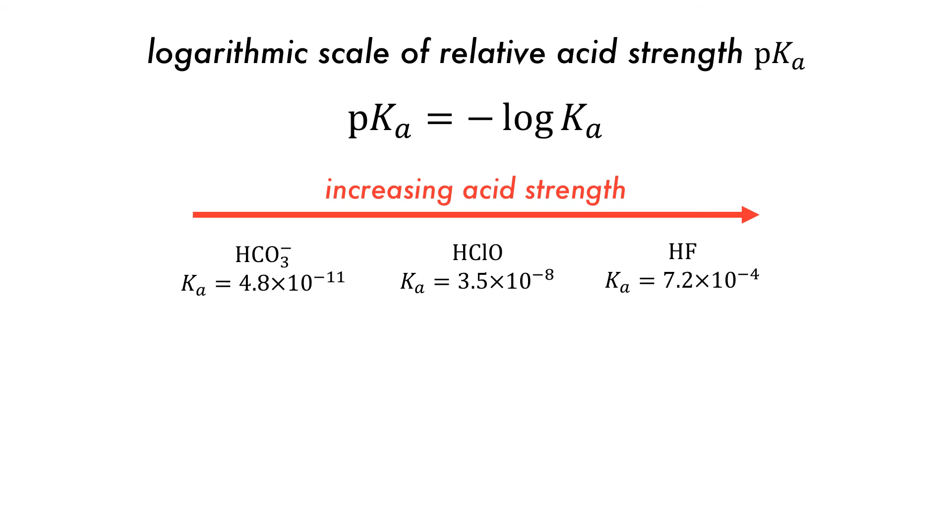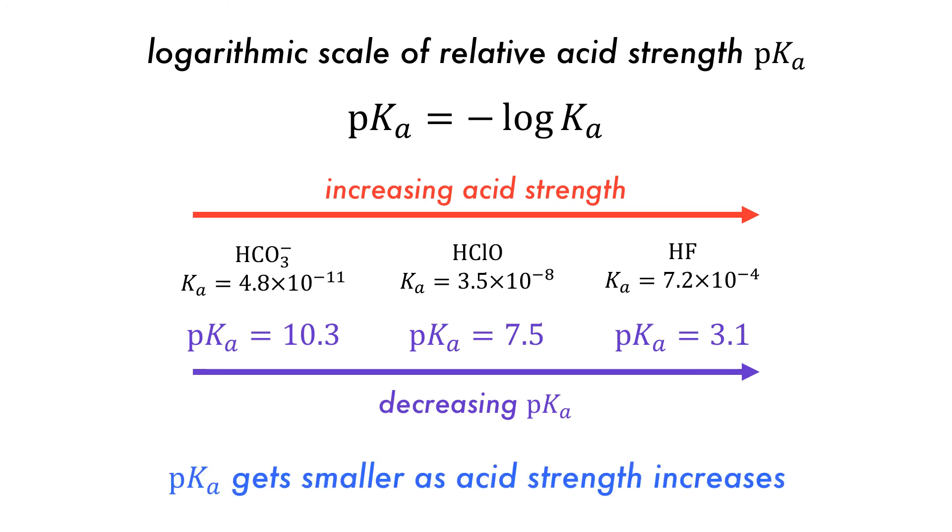So looking at our previous example, the Ka values can be converted to pKa values. And we can see that they get smaller as a function of acid strength. This is because pKa gets smaller as acid strength increases.